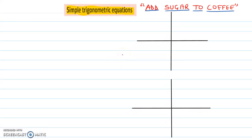Hi guys, today we are going to learn about some trigonometric identities. But before we learn trigonometric identities, we need to sketch some simple trigonometric equation curves. Because once you solve trigonometric identities and get the factors at the end, you need to sketch them. So first you need to learn the sketch, and this is related to the trigonometric identities — then we will solve. So let's see how we sketch it.